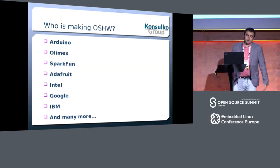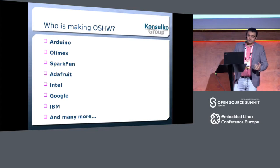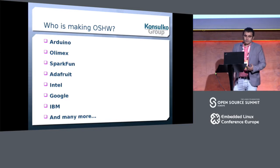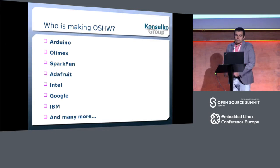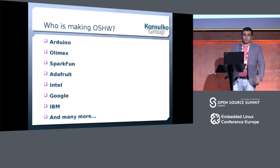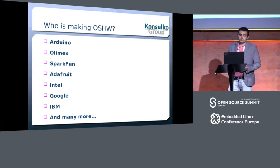Who is making open source hardware? I believe number one should be Arduino — it's widely popular, one of the very first embedded boards that became so popular, and it's based on open source hardware, which means anyone can manufacture it. Of course Arduino is a trademark so other manufacturers use different names. There's also Olimex in my hometown, Sparkfun, Adafruit, and even big corporations like Intel, Google, and IBM, which now release some hardware products under open source hardware licenses.